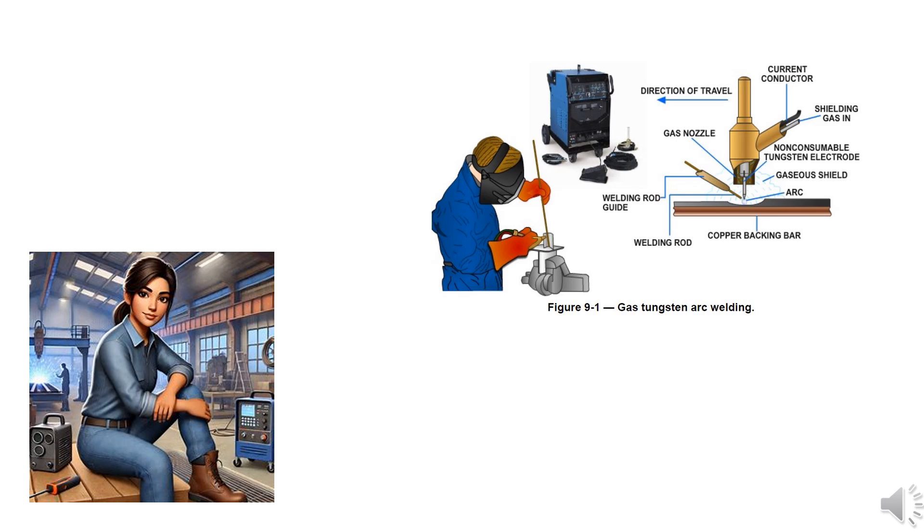1.0 Introduction to the Process. Gas tungsten arc welding, GTAW, is an arc welding process that produces coalescence of metals by heating them with an arc between a non-consumable tungsten electrode and the workpiece. Shielding is provided by an inert or semi-inert gas. The use of pressure and filler metal varies based on the application. This process is commonly referred to as TIG welding, an acronym for tungsten inert gas welding. Regardless of terminology, the principles remain the same.